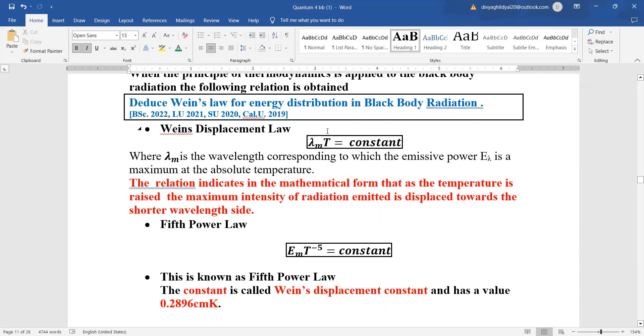Why? Because see lambda m into t is equal to a constant that means multiple of two variables is a constant. If I increase the value of one multiple, I will have to decrease the other in order to maintain this consistency. That is why the relation is indicating the mathematical form of Wayne's displacement law.